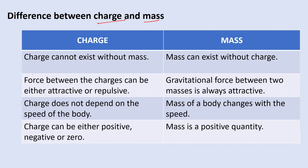The very first point is that charge cannot exist without mass, but mass can exist without charge. For charge to exist, a body must have mass. However, mass can exist without charge — it is not necessary that if a body has no charge, it won't have mass. It might have mass even though there is no charge.